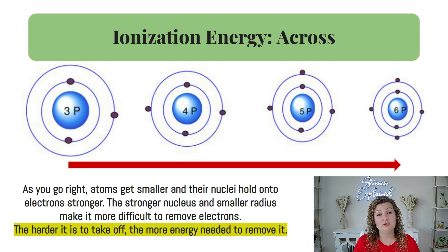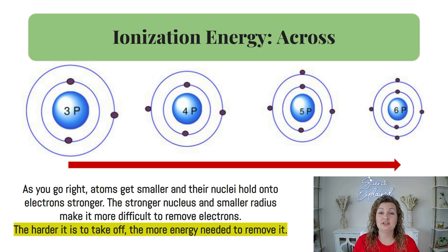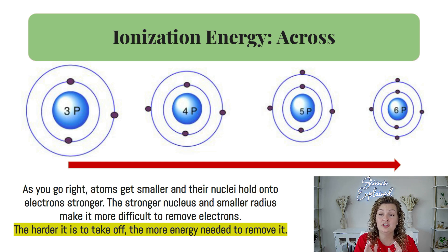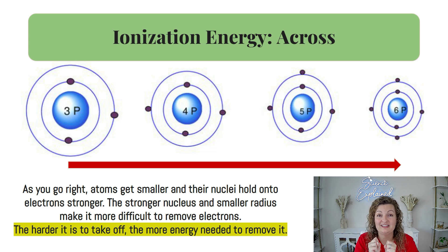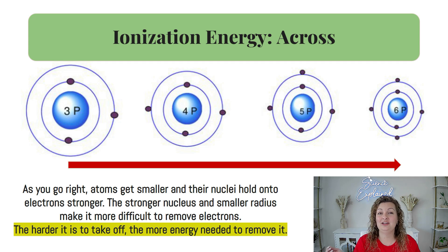This also goes for the size of the atom. As we move across in that same direction across the period, we are going to have our atoms get smaller and smaller in the atomic radii because they're being pulled in from the nucleus. And it's holding on so tight to those electrons, it's not going to be easy to take an electron off. Therefore, it's going to have a very high ionization energy.